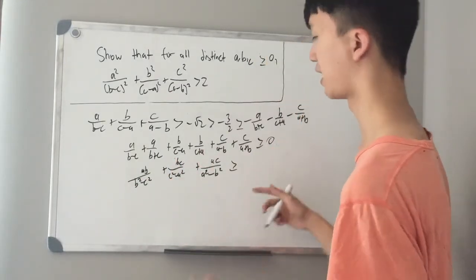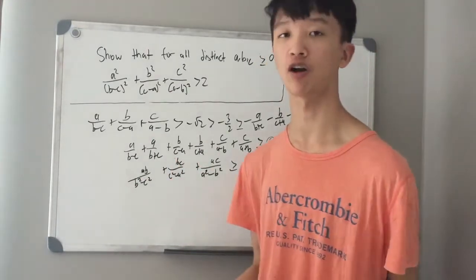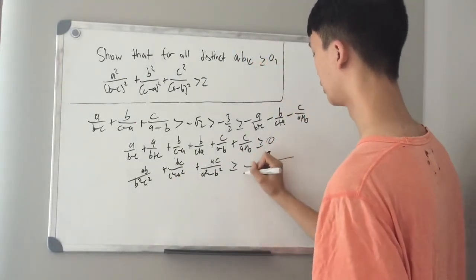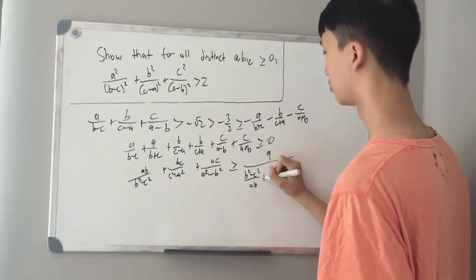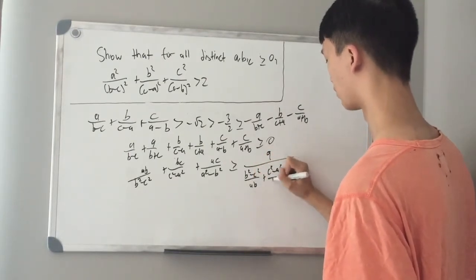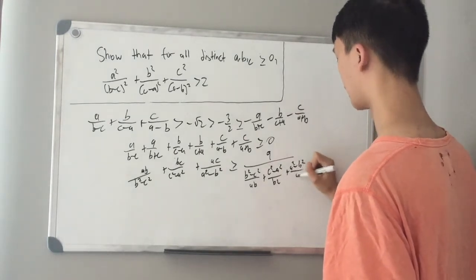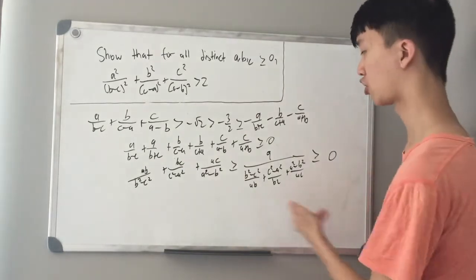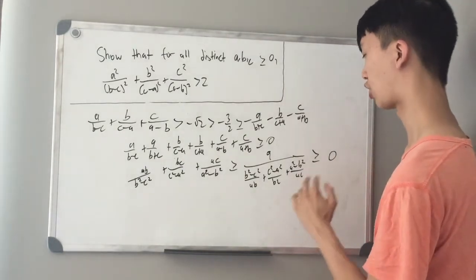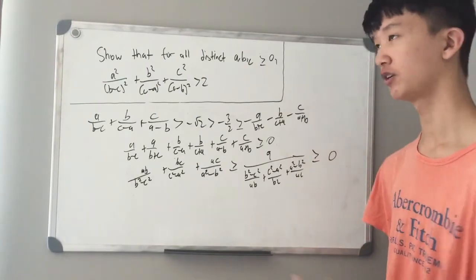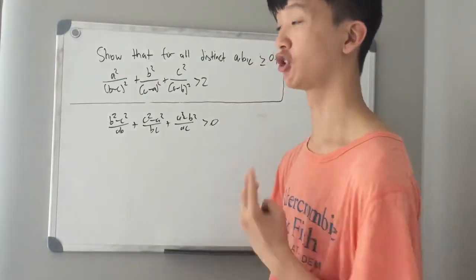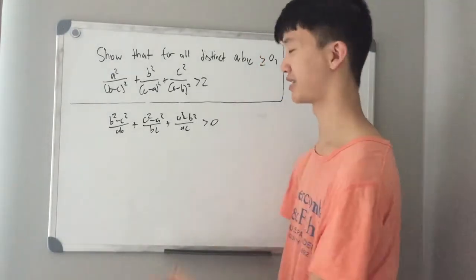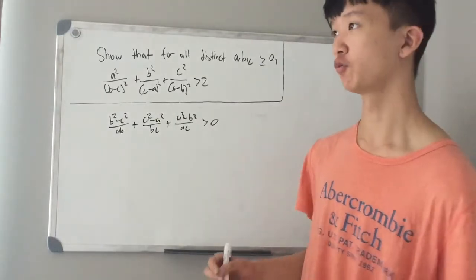Next we want to use AM-HM, the arithmetic mean–harmonic mean inequality. We know this is ≥ 9 / [(b²−c²)/(ab) + (c²−a²)/(bc) + (a²−b²)/(ac)]. We want to prove that this is ≥ 0. Looking at this term, notice that the fraction is ≥ 0 if and only if the denominator is positive. All that's left to show for our contradiction is that this denominator is greater than 0, but you can test values to see this is never true. To finish the proof, we set a common denominator.